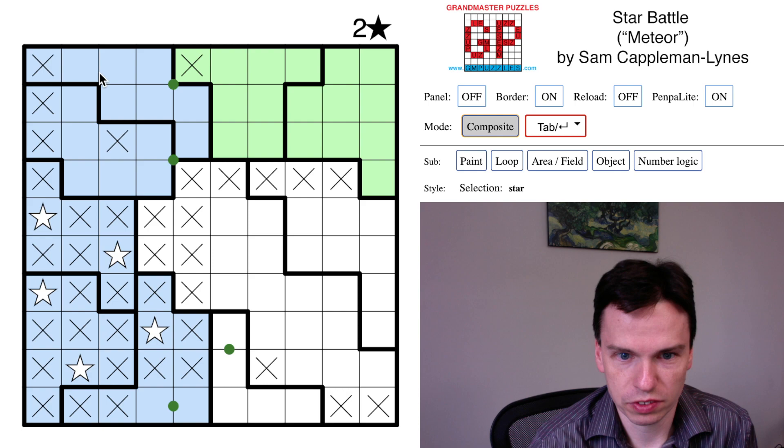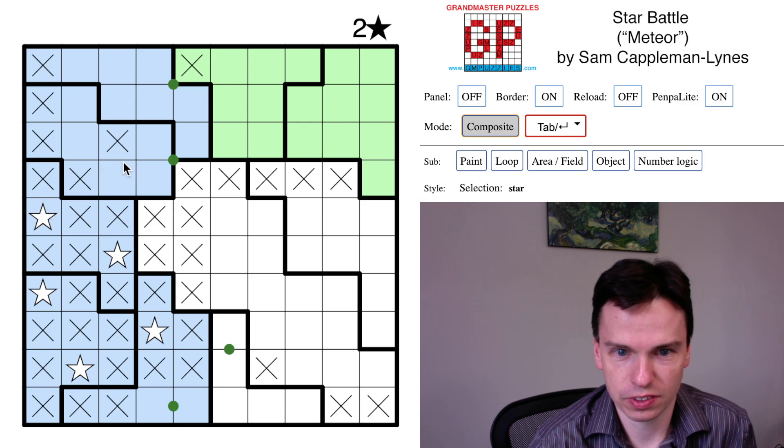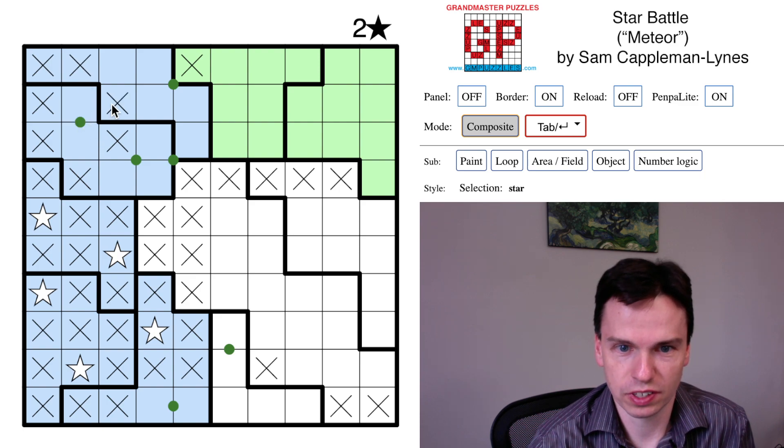We have some more constraints as we work our way up the grid. And one is going to come from recognizing I can only get, I actually have to mark this cell off first. I can only get one star here and that leaves one star here. That's going to finish this column. It's going to mark this cell off.